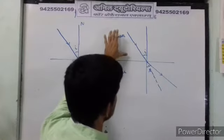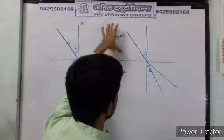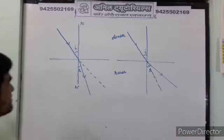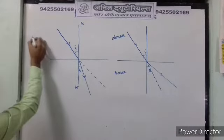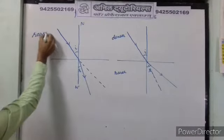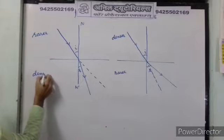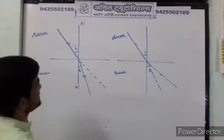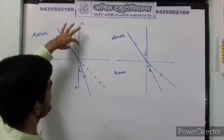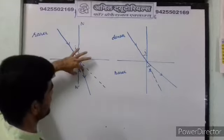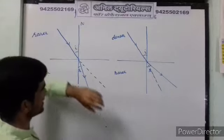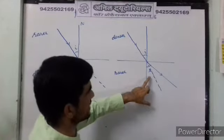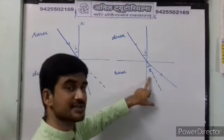When a ray of light propagates from denser to rarer, it moves away from the normal. If it comes from rarer to denser, it moves towards the normal. Here, the angle of incidence is more and the angle of refraction is less. In the other case, the angle of incidence is less and the angle of refraction is more.